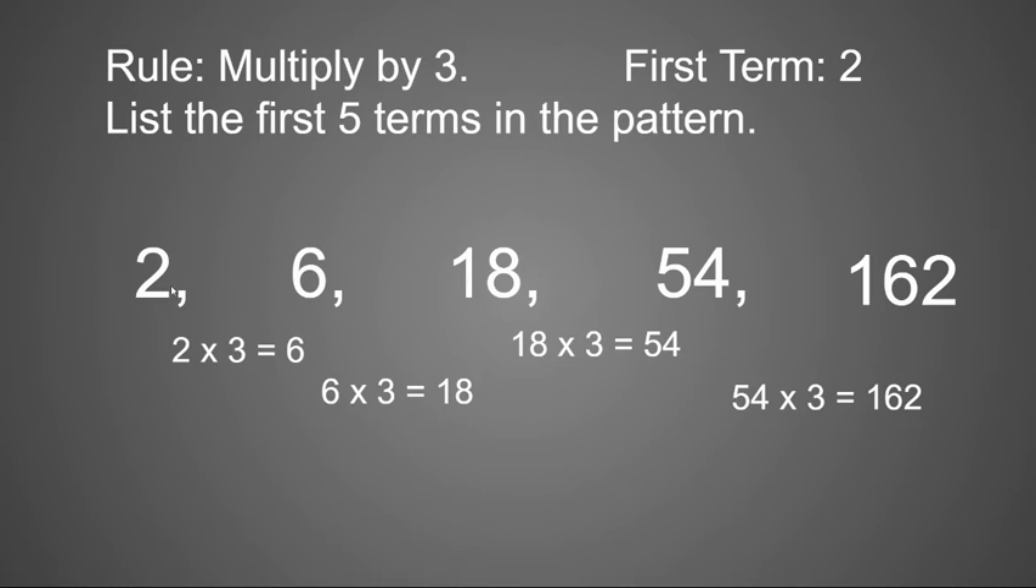But 162 is our next term. So our terms are 2, 6, 18, 54, and 162. And our rule was to multiply by 3.